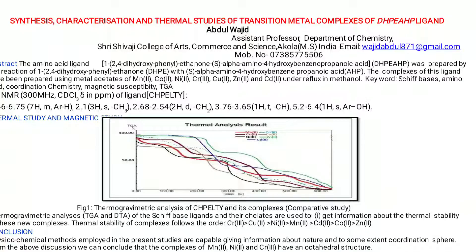First of all, in short I want to say how this particular ligand can be prepared. This ligand can be prepared by the condensation of one amino acid, that is 1,2,4-dihydroxyphenylethanone, with S-alpha-amino-4-hydroxybenzene-propanoic acid. It can be prepared by the reaction of DHPE — that is the ketone 1,2,4-dihydroxyphenylethanone — with